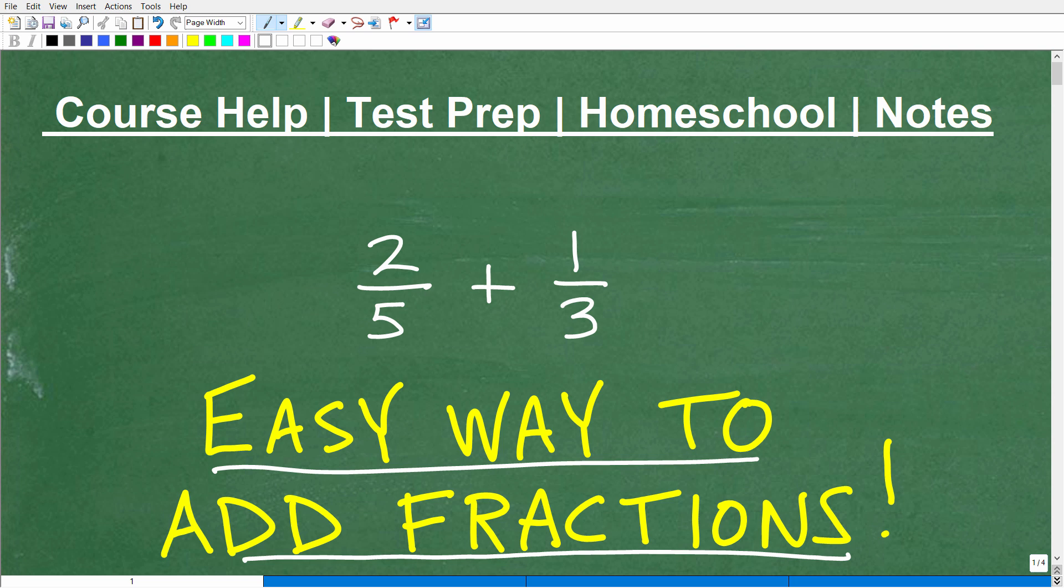So let's take a look at this problem here real quick. So we have 2/5 plus 1/3. We look at these bottom numbers down here, we call these the denominators. And hopefully most of you are recognizing that we can't add these fractions the way they are because they do not have the same denominator. So we're going to have to find the lowest common denominator, change these fractions, and add them.